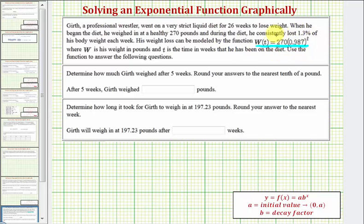Notice how we can tell the initial weight was 270 pounds, and because he's losing 1.3% of his weight each week, the base is 0.987, which is 100% minus 1.3% converted to a decimal. So because the base is between zero and one, we have exponential decay.